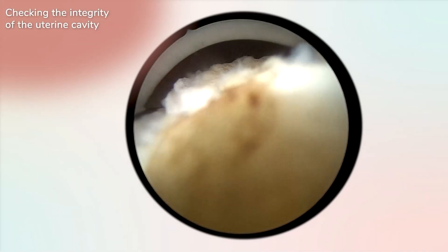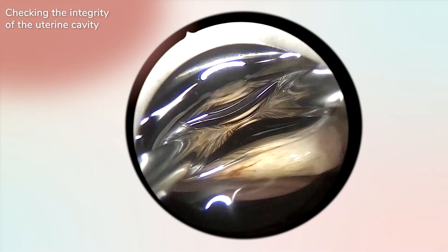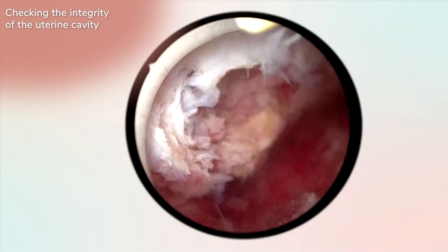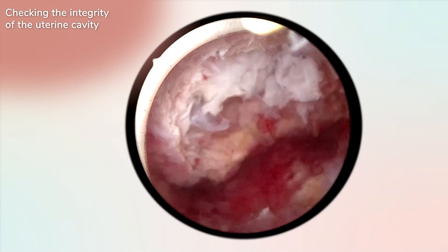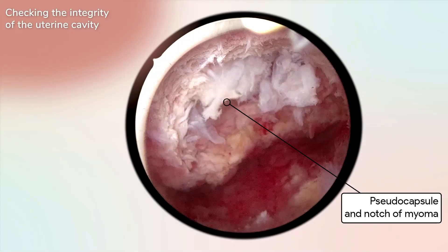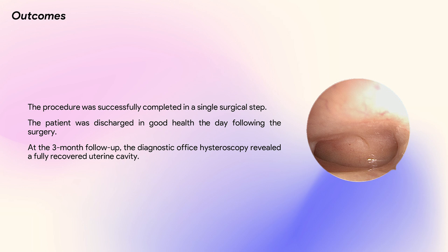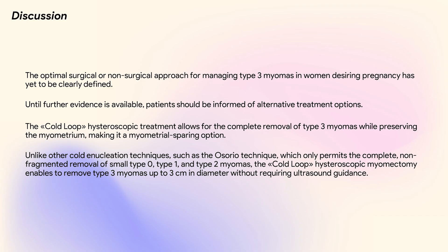At the conclusion of the procedure, the entire myoma has been successfully removed, allowing for a clear visualization of the myoma's notch along with its intact pseudo-capsule. The procedure was successfully completed in a single surgical step. The patient was discharged in good health the day following the surgery. At the three-month follow-up, the diagnostic office hysteroscopy revealed a fully recovered uterine cavity. The optimal surgical and non-surgical approach for managing type 3 myomas in women desiring pregnancy has yet to be clearly defined.